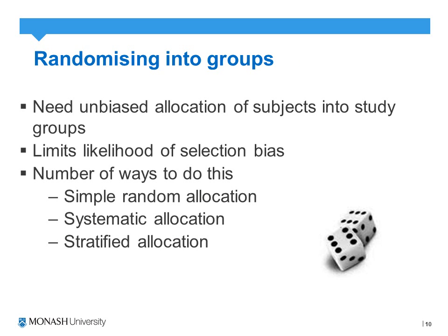The randomization process needs to be unbiased in allocating participants to the two groups. Simple randomization is, as the name suggests, simply allocating participants to one group or another using something like a coin flip or generation of random numbers from a computer program such as Excel, where the number assigned to each patient determines their group allocation.